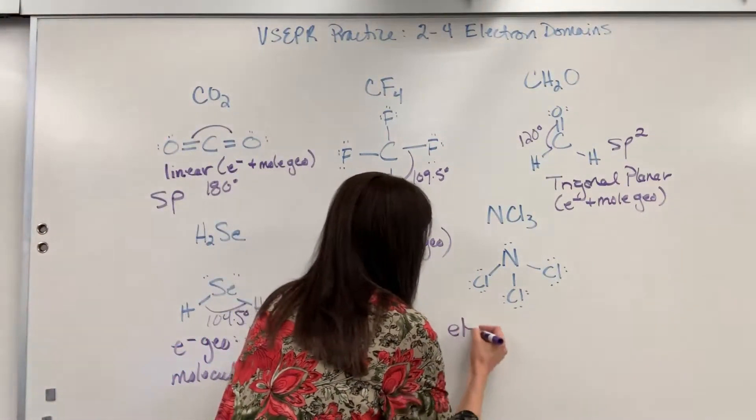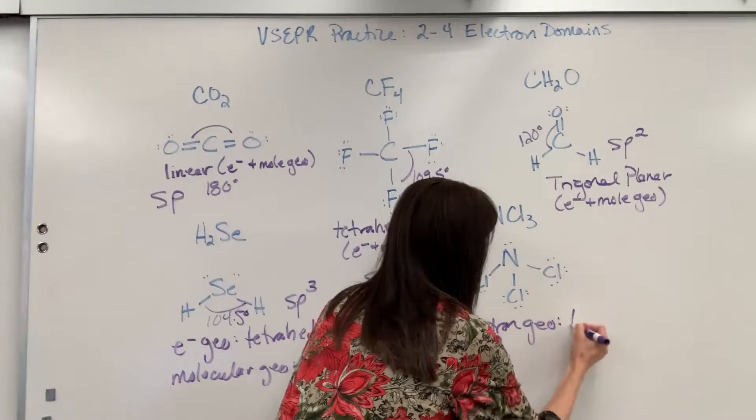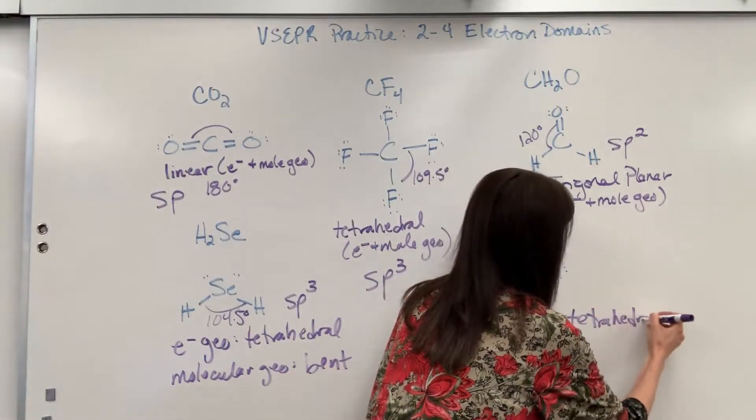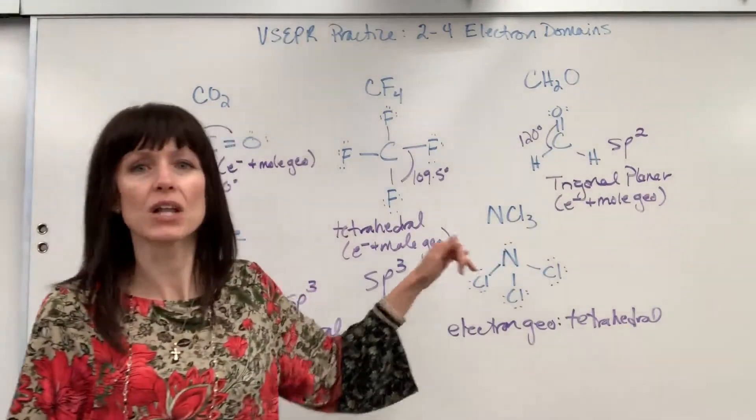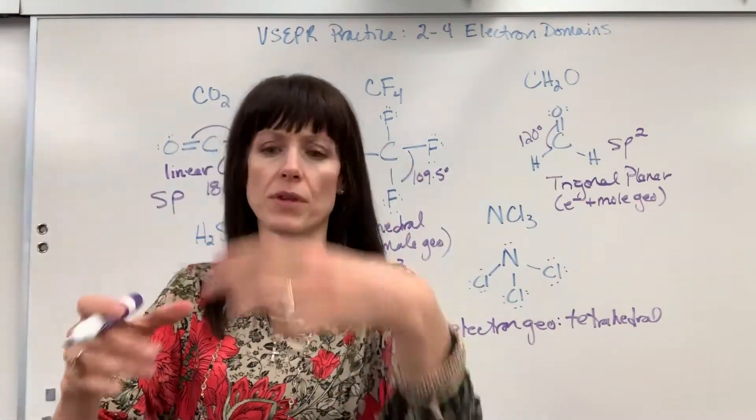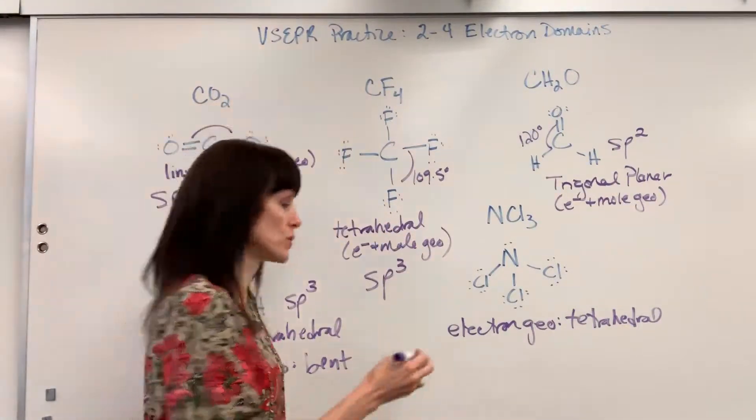Four electron domains. The electron geometry on that, of course, is tetrahedral. But then what we would see, you can't see that lone pair. All you see would be the bottom of the tripod, the one, two, three legs. So this name kind of cool. The molecular geometry is trigonal pyramidal.